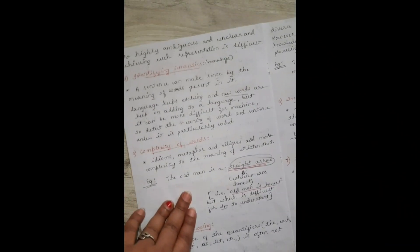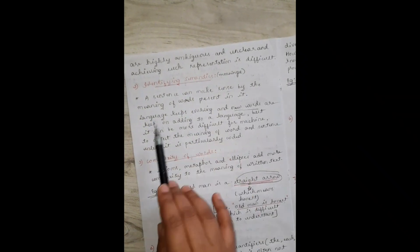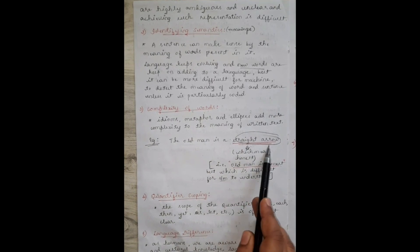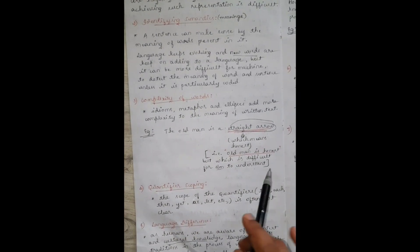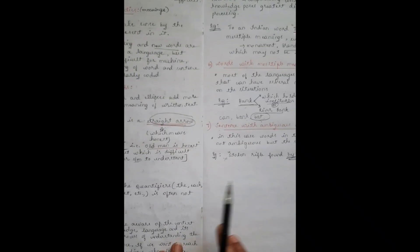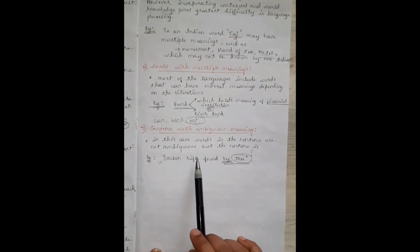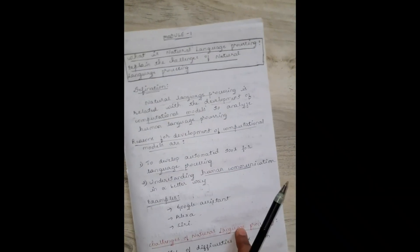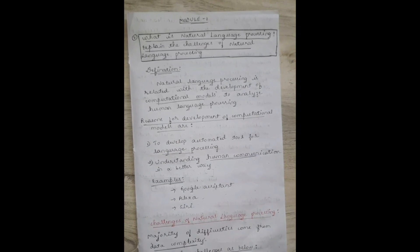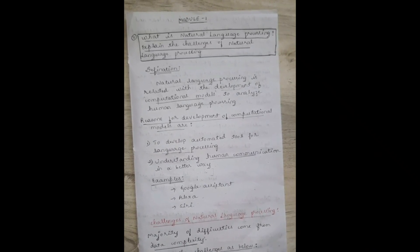So to summarize, the challenges of natural language processing I covered are: phrasing ambiguity, identifying semantics considering language evolution, complexity of words like idioms and metaphors, quantifier scoping, language differences considering global diverse audiences, words with multiple meanings, and sentences with ambiguous meaning. I hope this is helpful. Thank you for watching — please let me know in the comments which topic you want me to cover next, and please subscribe!